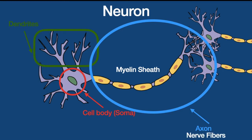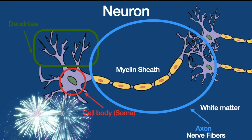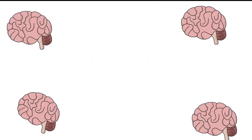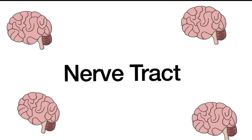A myelinated axon is sometimes called white matter, so the white matter of the brain is basically the myelinated axons. The dendrites and the cell body make up the gray matter of the brain. Signals travel from the dendrites to the cell body and then to the axon. All the nerve fibers together make up what you call a nerve tract, and the corpus callosum is a nerve tract made up of many myelinated axons — so it is white matter.